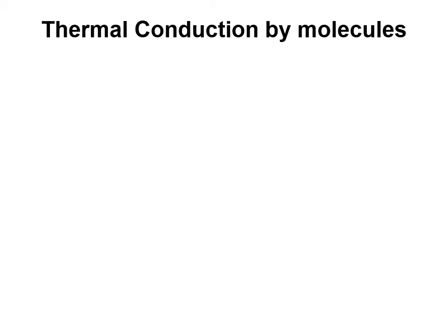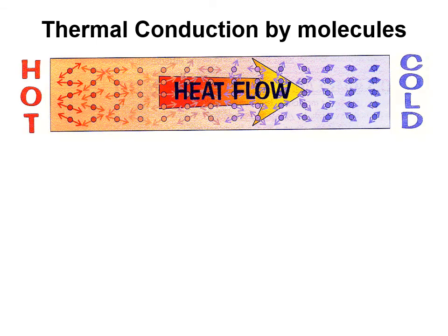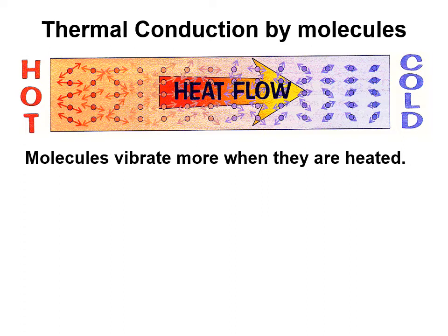How does conduction happen at the molecular level? Take a metal rod: one end is hot, the other is cold, and heat moves from the hot part to the cold part. In the hot part, the molecules are moving quickly — just as you would start to shake more if heat were applied to you, because you're gaining kinetic energy.